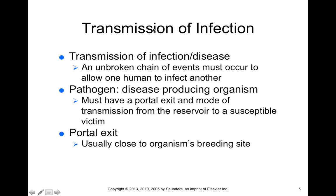In terms of transmission and infection of diseases, transmission and infection require an unbroken chain of events that must allow for diseases to spread from one human to another. We refer to a pathogen, which is a disease-producing microorganism. It must have a portal of exit, a mode of transmission, a reservoir, and a susceptible victim in order to spread throughout a population.